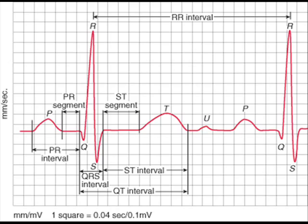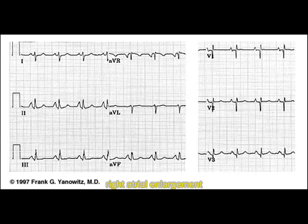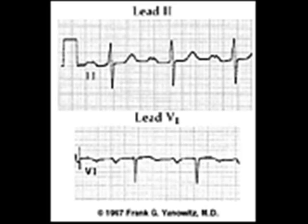Now let us review some of the most important EKGs. Here you can see a big P wave. This is very common in right atrial enlargement — because the atria is big, the P wave will be big. You can also see left atrial enlargement, which shows a notched or M-shaped P wave, especially visible in the upper EKG. This is characteristic of left atrial enlargement.